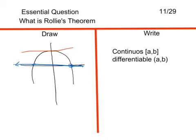This is Rolle's Theorem, and it ends at two points on zero. So the slope point must be between these two points.